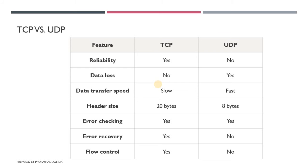In UDP, communication starts directly, so it is not reliable — it does not provide a guarantee that the data reaches the destination or not. While TCP provides that guarantee with the help of acknowledgements.